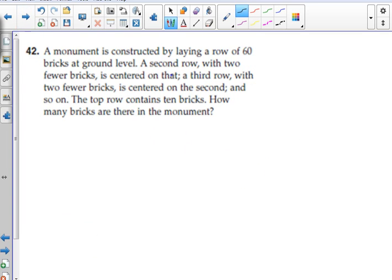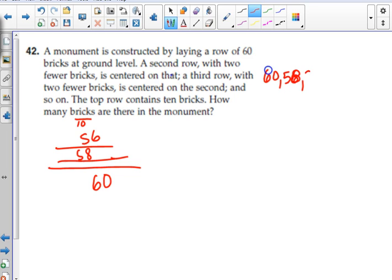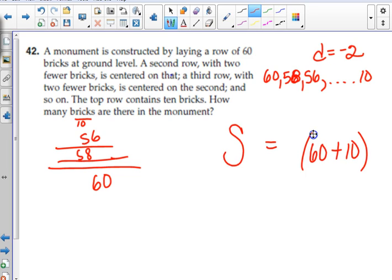All right. Go in the other direction. The bottom row has 60 bricks. The next row has 58. The next row has 56. Okay. I didn't do that very well. Anyway. We want the total number of bricks. If the top row gets us down to 10 bricks. So, the sequence goes 60, 58. What's the difference? Nope. The difference is negative 2. Okay. We need the sum of the sequence. We know the first and last terms. We don't know how many rows there are.